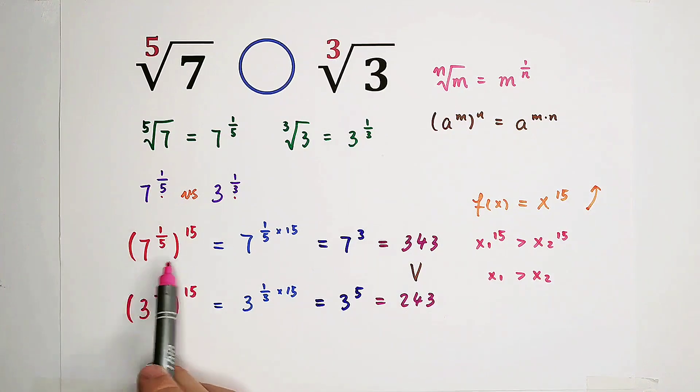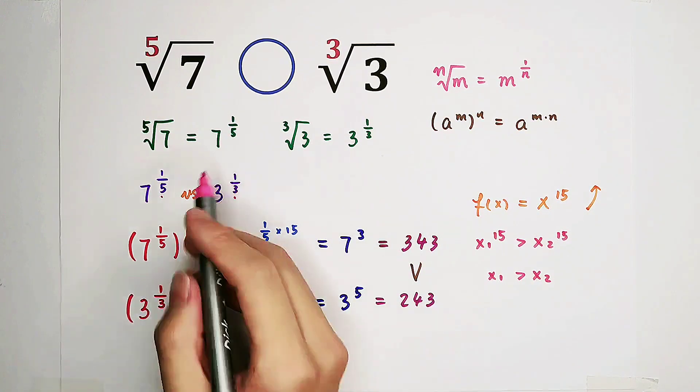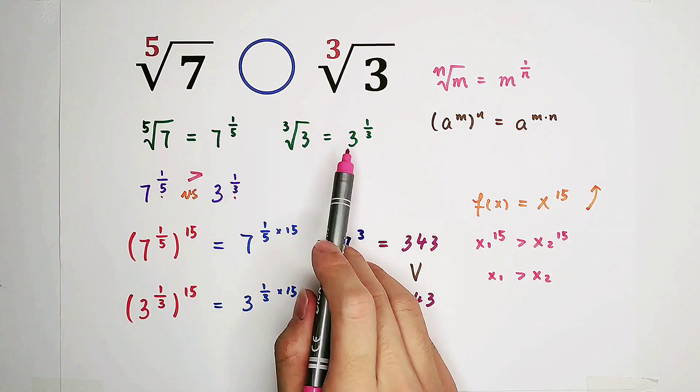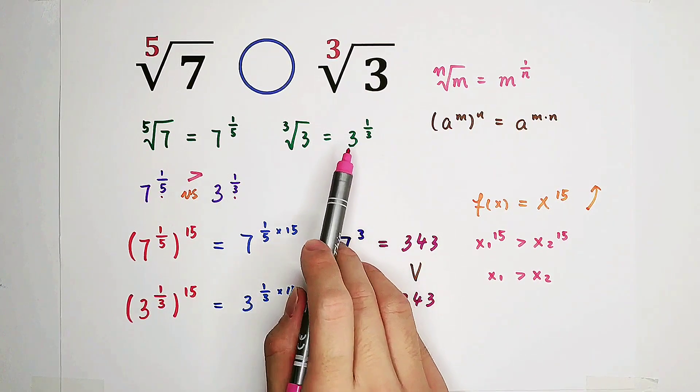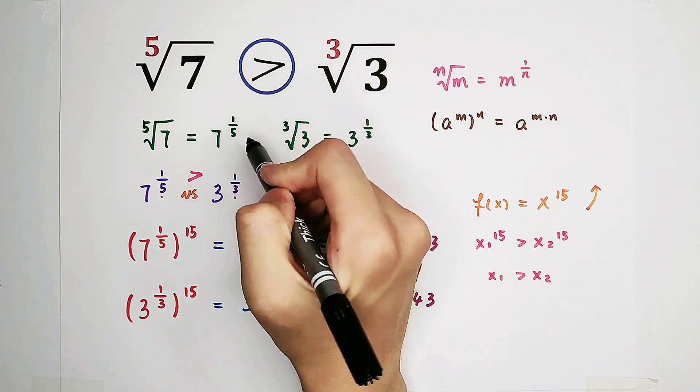So that implies if this one is greater than this one, this is greater than this. Since these two guys are equal, these two guys are also equal. So the answer is just the left hand side is much greater.